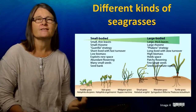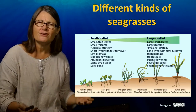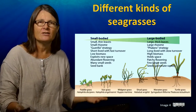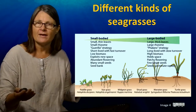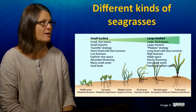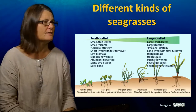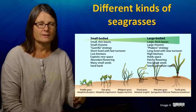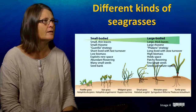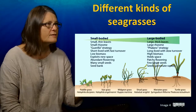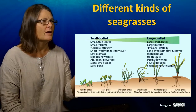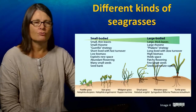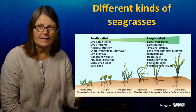Now these different kinds of seagrasses have different ecologies, or different suites of traits that lead to differences in the way they respond to disturbances. The small species, which include Halophila, Ruppia is sort of in the middle, but Zostera and also Haloduli - they have small, thin leaves and very small rhizomes. They're short-lived, and they grow very rapidly, and they're easily grazed.